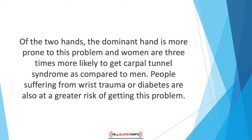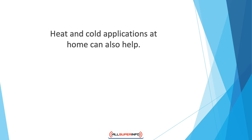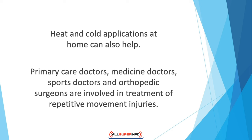If carpal tunnel syndrome persists, the sufferer loses flexibility in the region, and without treatment the end result can be complete loss of function in the hands. The dominant hand is more prone to this problem, and women are three times more likely to get it than men. People with wrist trauma or diabetes are also at greater risk. Rehabilitation includes occupational therapy, pain management techniques, and heat and cold applications. Exercising the affected areas helps strengthen them and prevent complete loss of mobility. Primary care, sports, and orthopedic doctors are all involved in treatment.